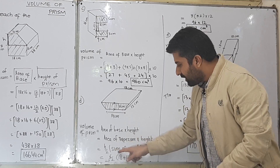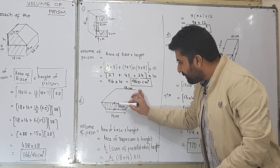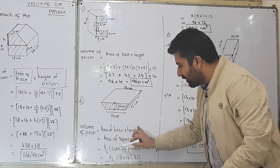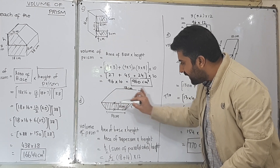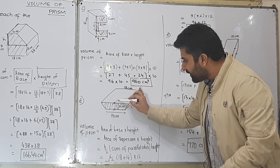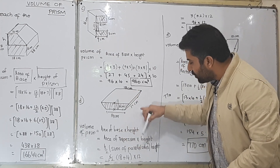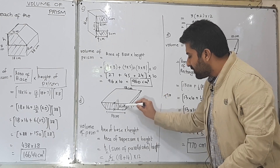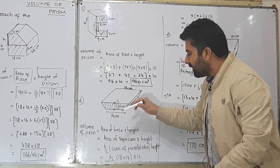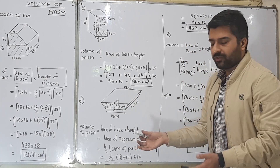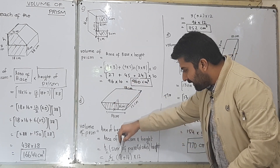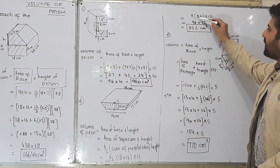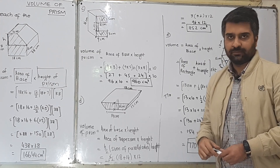Area of base equals area of trapezium: h/2 × (sum of parallel sides). The height of the trapezium is 6 — the perpendicular distance between the parallel sides indicated by arrows. So: 6/2 × (18 + 14) = 3 × 32 = 96. Multiplied by the prism height of 12: 96 × 12 = 1,152 cm³.